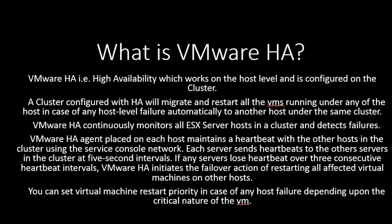What is VMware HA? VMware HA, or High Availability, works at the host level and is configured on the cluster. A cluster configured with HA will automatically migrate and restart all VMs running on a failed host to another host under the same cluster. VMware HA continuously monitors all ESX server hosts in a cluster and detects failures. An HA agent placed on each host sends a heartbeat to other hosts in the cluster at 5-second intervals. If any server loses a heartbeat over 3 consecutive intervals, VMware HA initiates a failover action, restarting all affected virtual machines on other hosts. You can set virtual machine restart priority in case of host failure depending on the nature of the VMs.